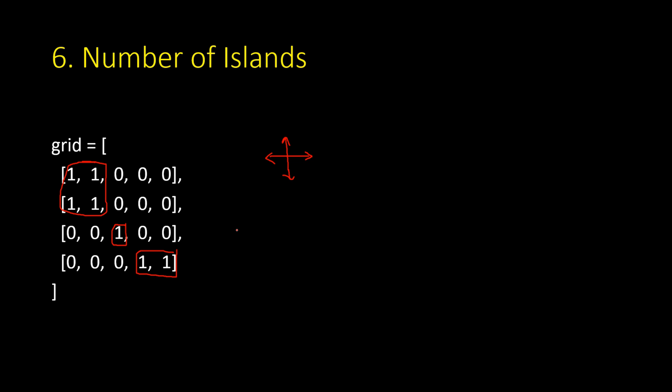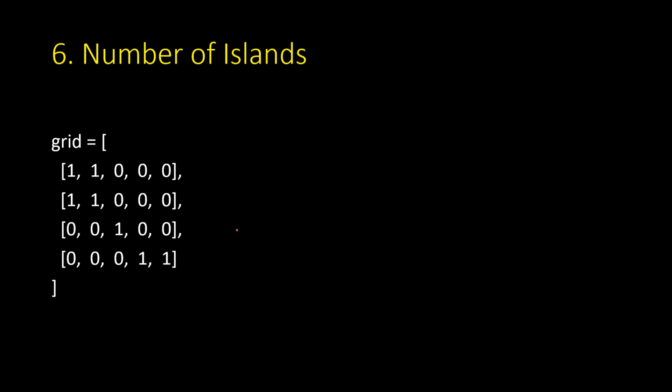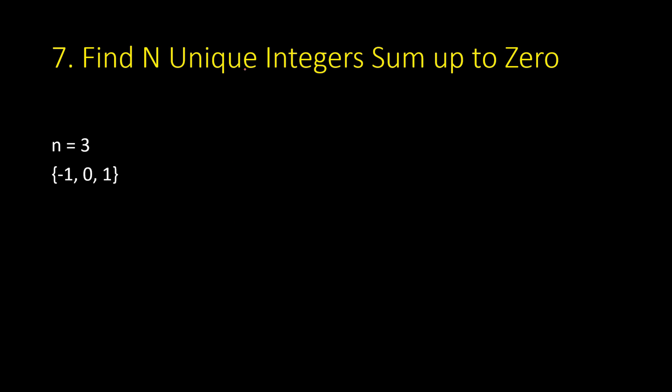Next is find N unique integers that sum up to zero. If you are given 3, that means you have to find three unique integers whose sum is zero. There can be multiple possible answers for this problem.